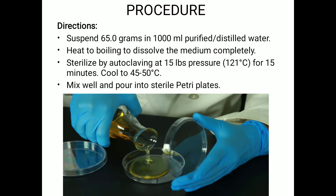Why do we do autoclaving? It is for sterilization. We sterilize by autoclaving at 15 lbs pressure at 121 degrees Celsius for 15 minutes. After 15 minutes, we take out the media and cool it to 45 to 50 degrees Celsius. Once it is cooled down and touchable, we mix it well before pouring into the petri plates. These plates should be sterile.